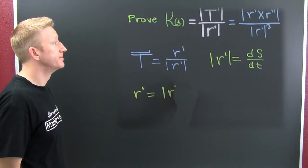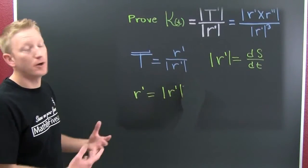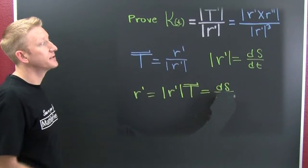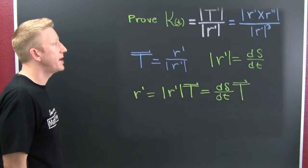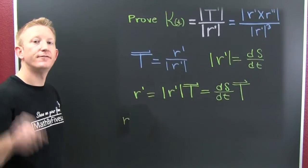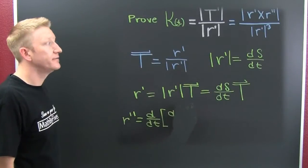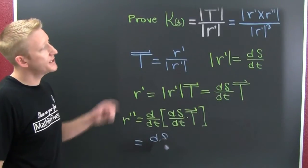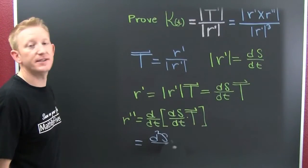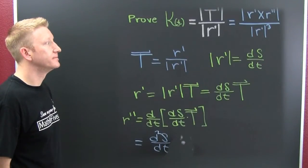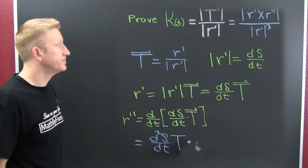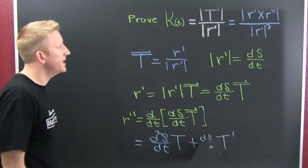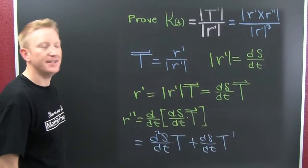So r prime equals T times the magnitude of r prime, that is T times ds/dt — that's our first derivative. Now for the second derivative, we apply the product rule: it's the derivative of the first times the second plus the derivative of the second times the first. So r double prime equals the second derivative of s with respect to t times T, plus ds/dt times T prime.